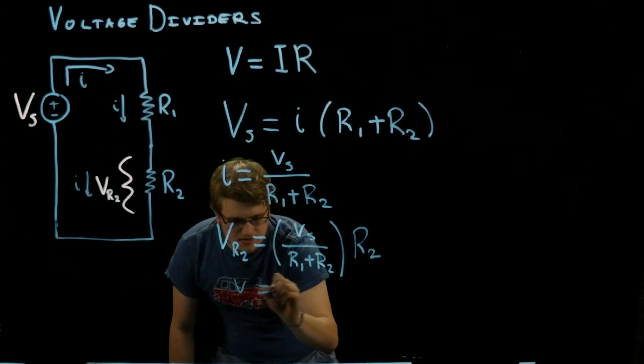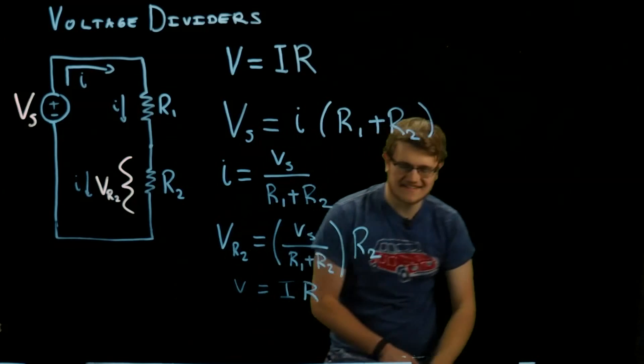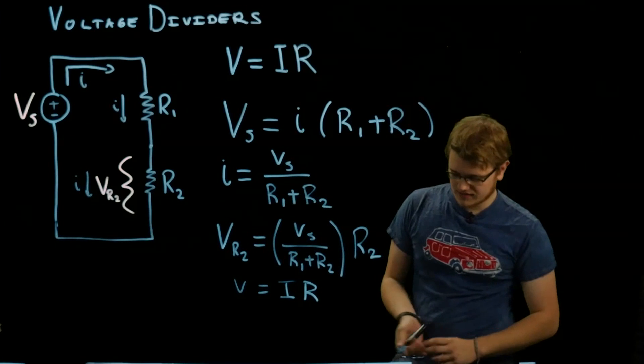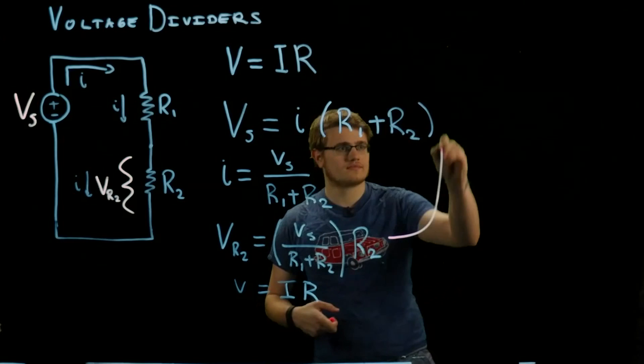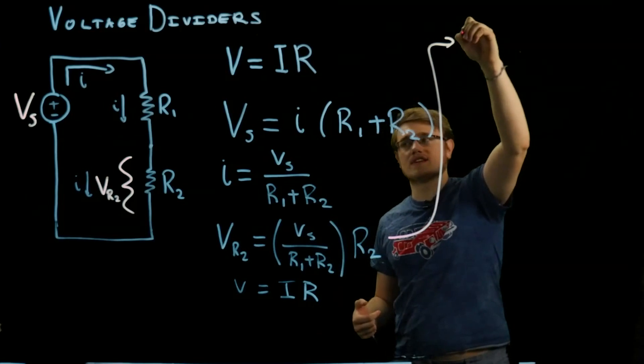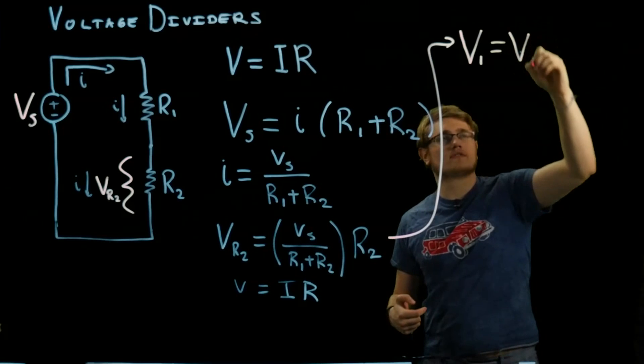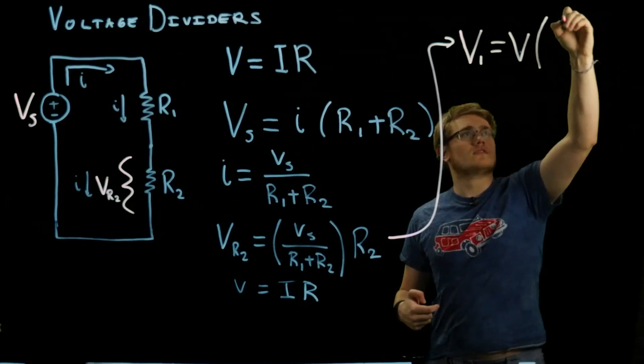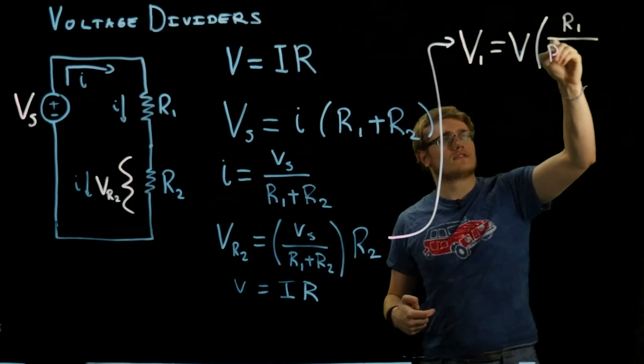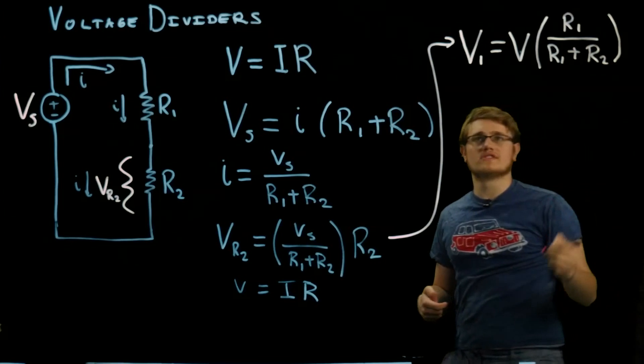From this, we can derive the voltage divider formula, which takes this form. Whatever voltage you're trying to find, you take the source voltage and multiply it by the resistor you're trying to find the voltage of, over the resistor you're trying to find the voltage of plus the resistor in series with it. That's the voltage divider formula.